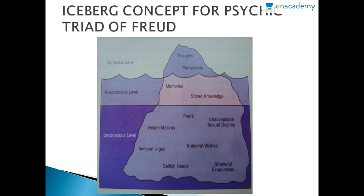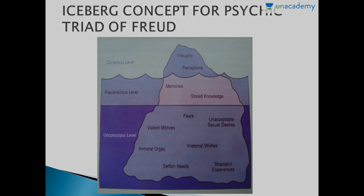Before that, I would like to tell you about the iceberg concept for the psychic structure of Freud. The iceberg concept states that there are three levels of a child's brain. The unconscious level includes violent motives, fears, unacceptable sexual desires, irrational wishes, selfish needs, and shameful experiences. The pre-conscious level contains memories and stored knowledge. The conscious level includes our thoughts and perceptions.